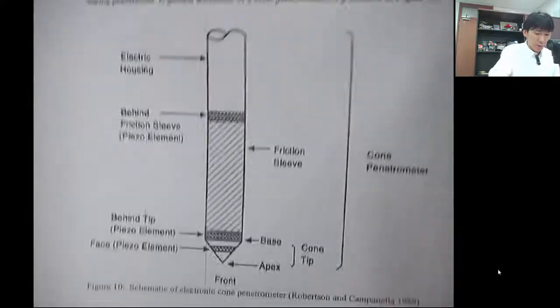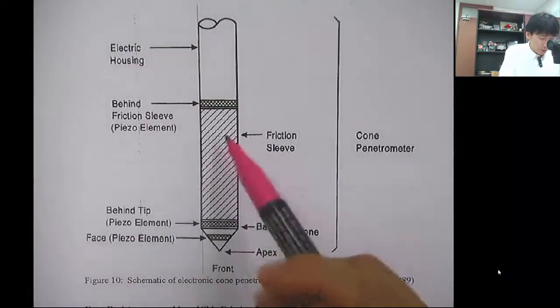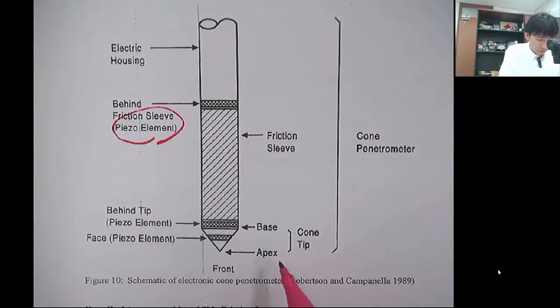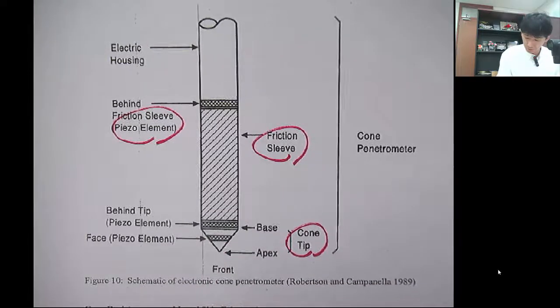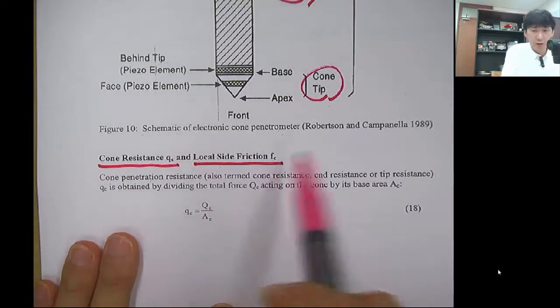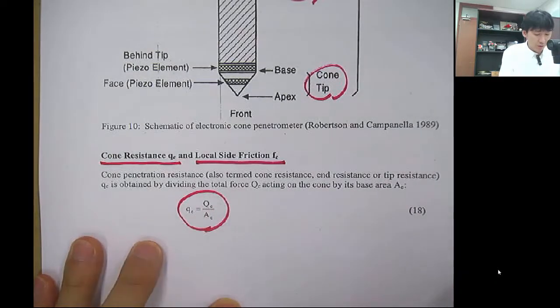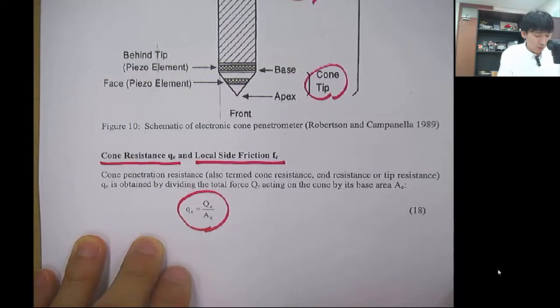It shows the simple schematics of the CPT. Here, the friction sleeve and cone tip, and you have a piezo element to get the pore pressure. What you get is the cone resistance and the local side friction Fs. The cone resistance QC can be computed by dividing the QC, the large QC the force, by its base area.